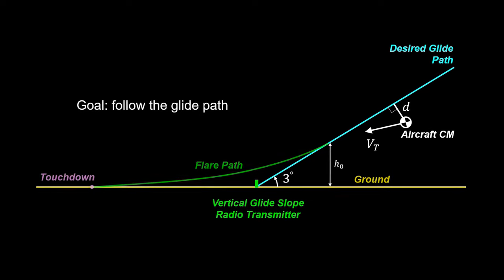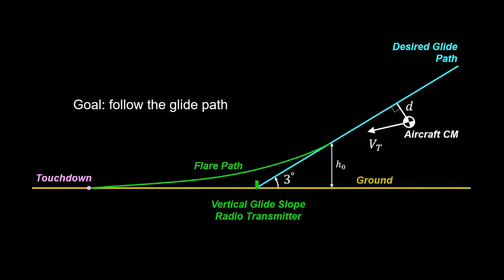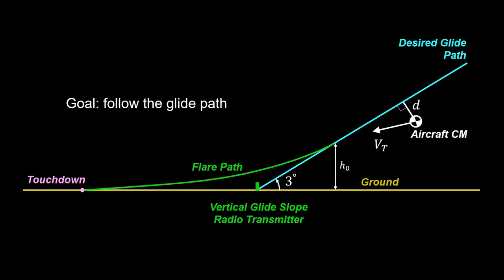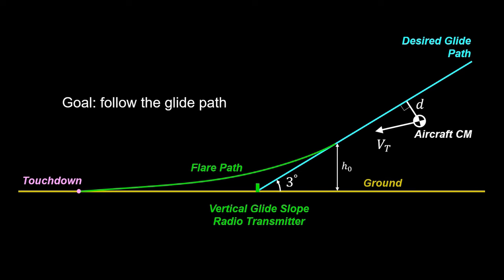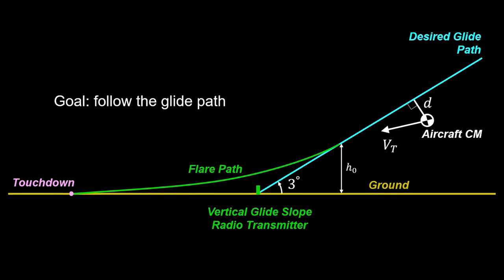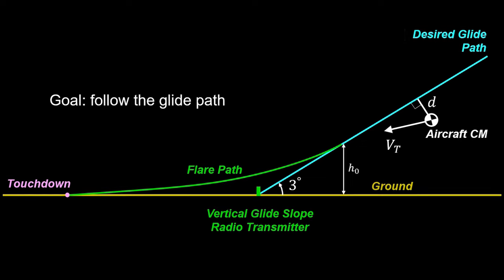The transition from glide path to flare path involves not only a switch in guidance, but also a switch in the controller. And it is important that this switch occur with minimal transients due to change in flight control law.